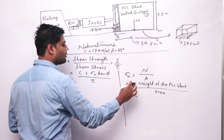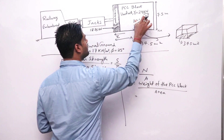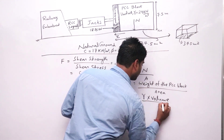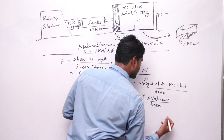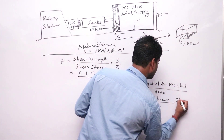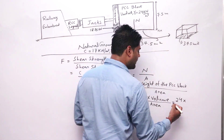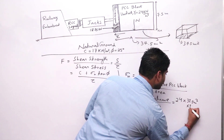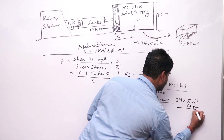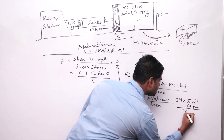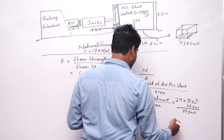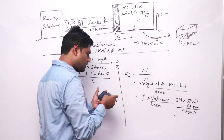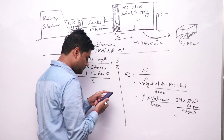So how do we calculate the weight of this PCC block? The unit weight gamma times volume divided by area. Gamma is given as 24, and volume is area times height. Area is 37.5 m² and height is 7.5 m, divided by area 37.5 m². The 37.5 values cancel, so sigma_n equals 24 into 7.5, which is 180 kN/m².